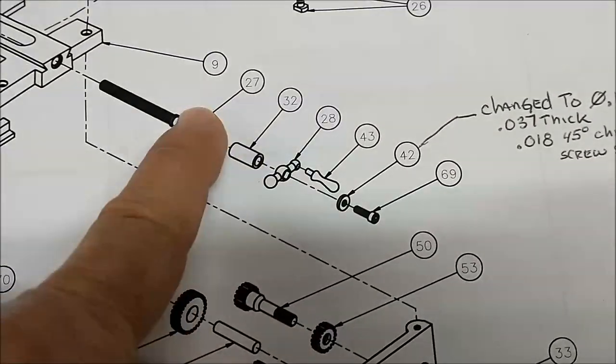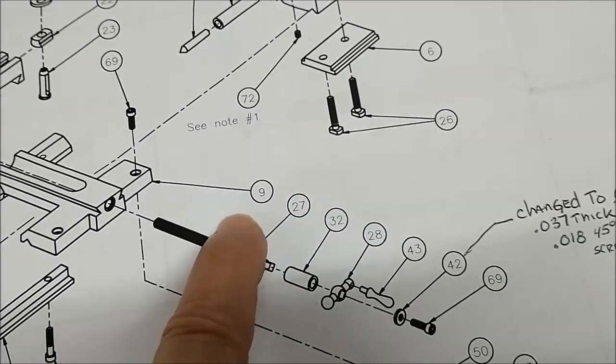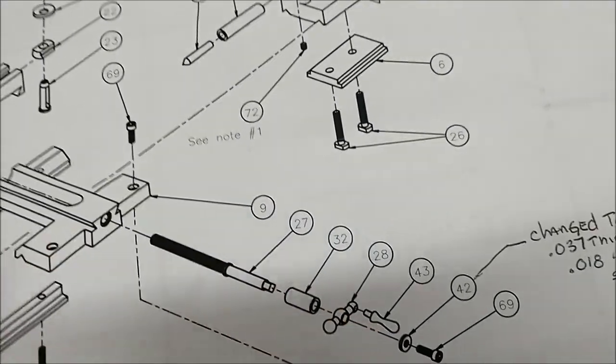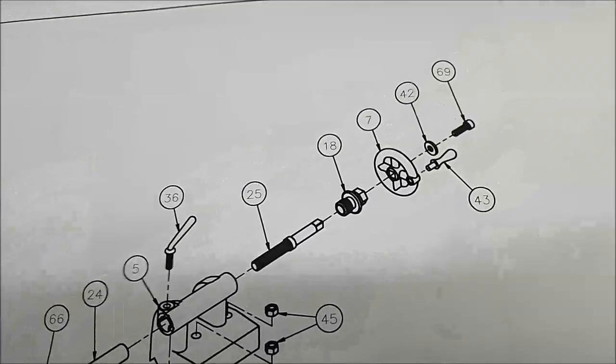Now, putting the dial on this is going to be a whole different animal. This square has to be very concentric, very true positioned to the outside, or when you turn the crank, it's going to run out. It's not going to look like anything, it's going to run out.